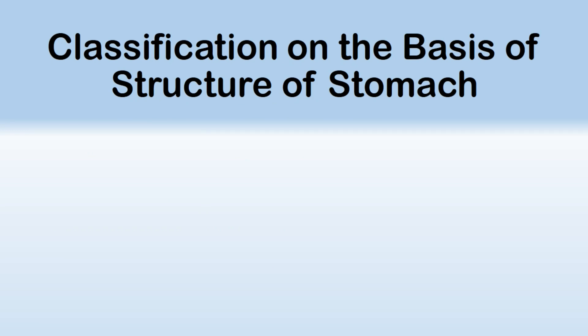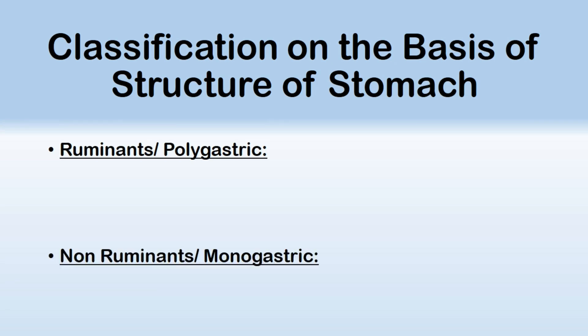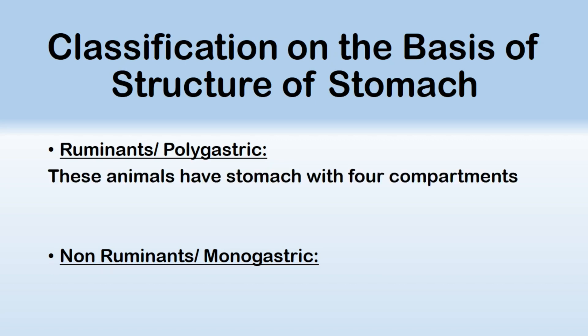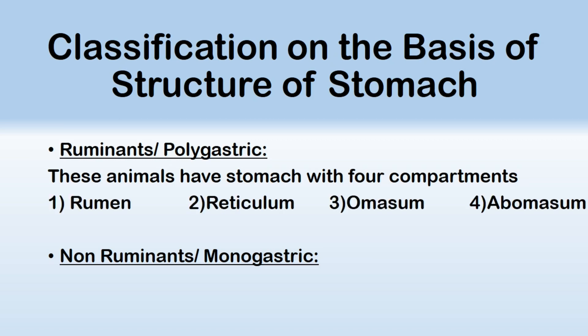Do you think that different farm animals might have a different type of stomach? Yes, you are right. Farm animals are classified into two main groups on the basis of their stomach. One of them is ruminants and the other one are called non-ruminants or monogastric.